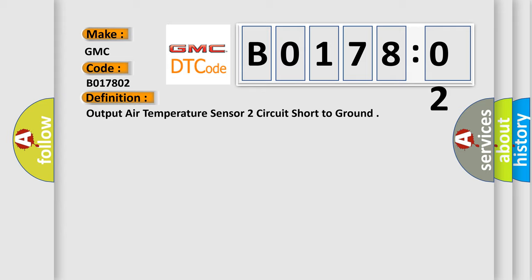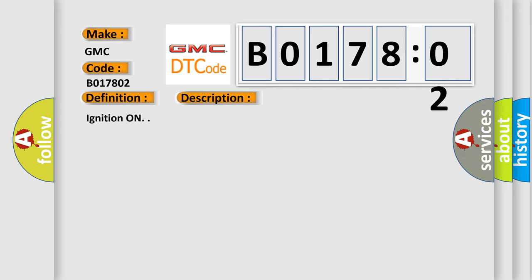The basic definition is Output air temperature sensor to circuit short to ground. And now this is a short description of this DTC code: Ignition on.